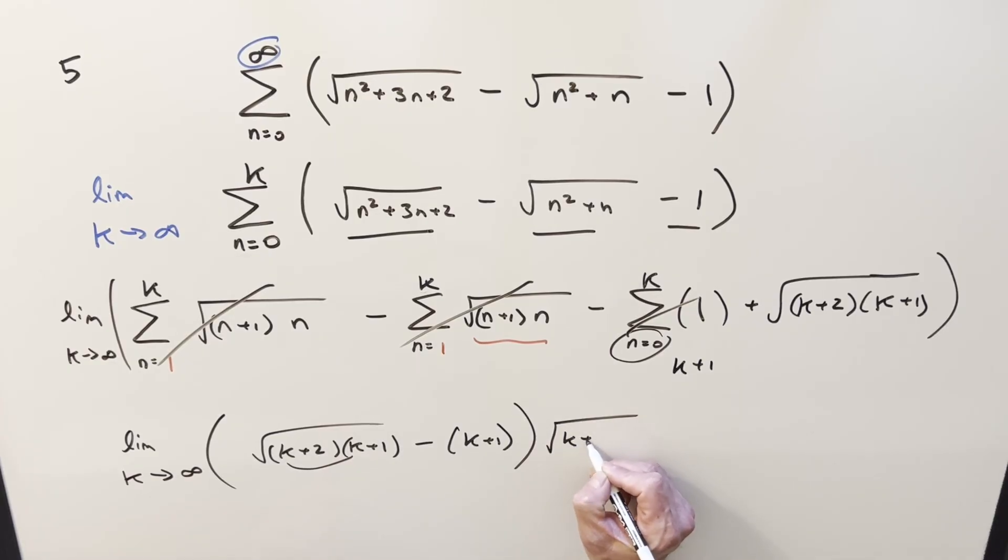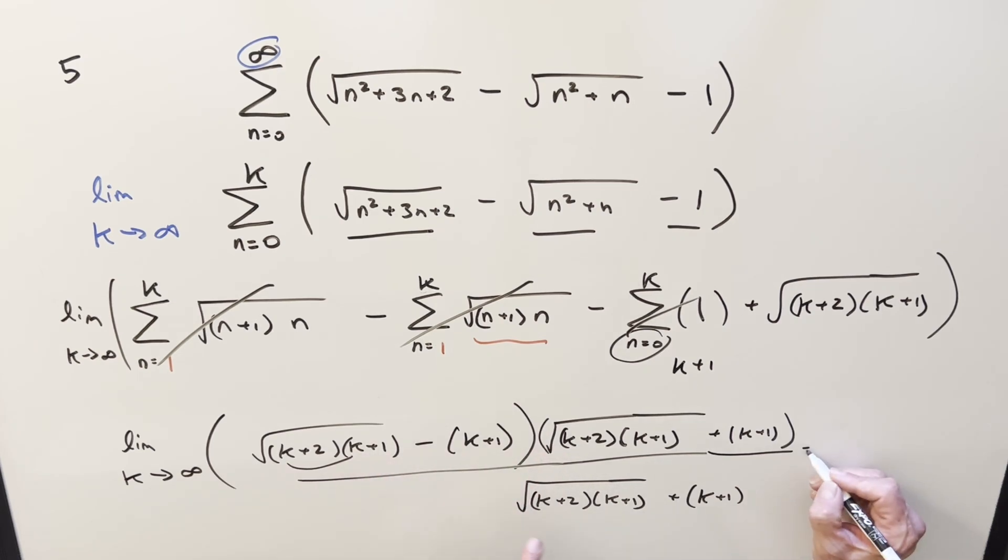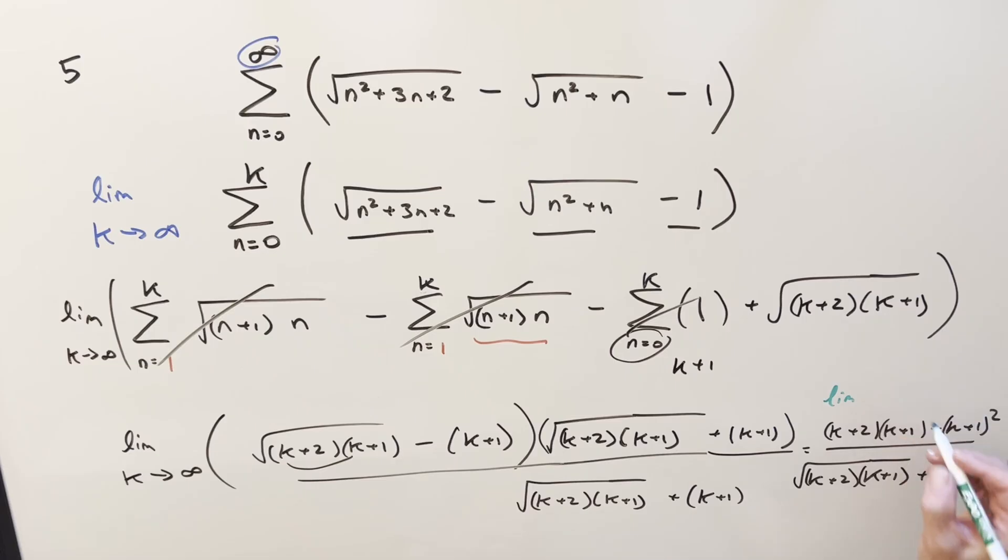So I'll multiply in by this thing. Now when we multiply this all out, we've got like a difference of two squares. So what's going to happen is we're going to drop the square root in the numerator. So we're going to have k plus two times k plus one, and then we're going to get a minus k plus one squared all over the same denominator. And as you can see, I'm totally out of space. So let's finish this up on the next board.